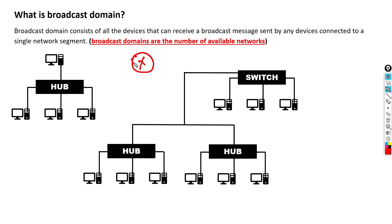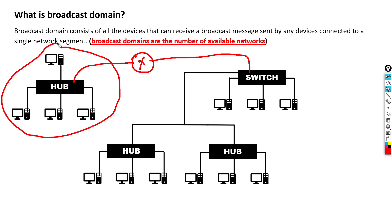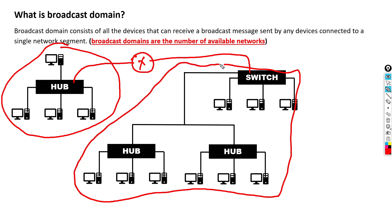Now if we place a router — router divides the network. For example, one hub is connected to the router and one switch is connected to the router. Now we have two networks: this is one network, and this is another network. Whatever data PC number one is sending only gets delivered to the four PCs in its network — this is one broadcast domain. The router does not broadcast data across, so the data stays within that network. The other network is another broadcast domain. Two networks means two broadcast domains.